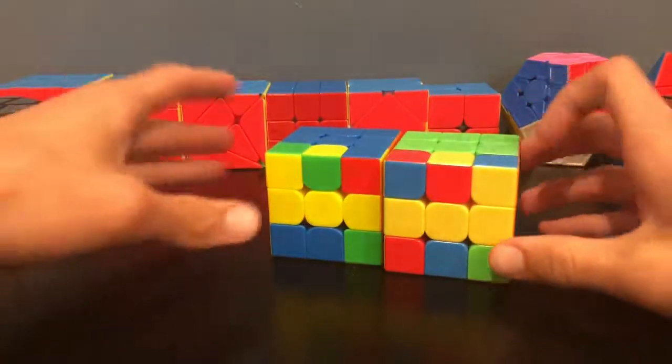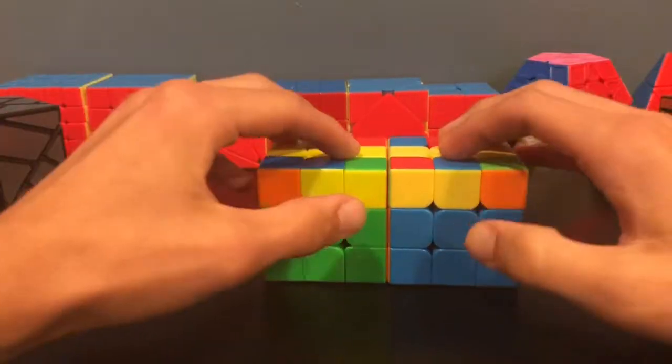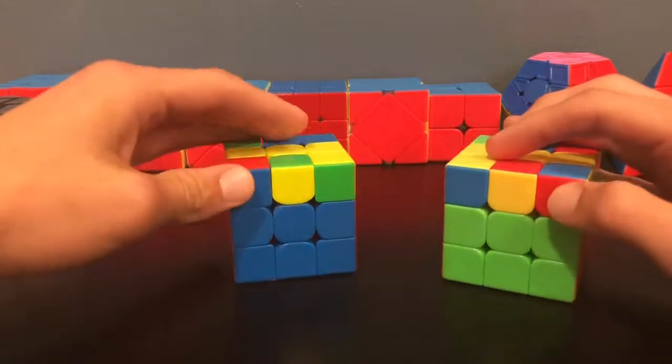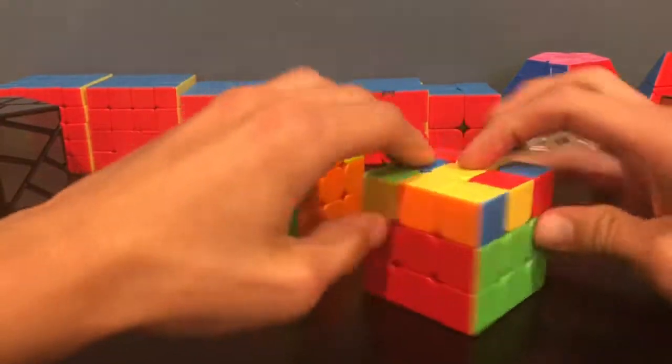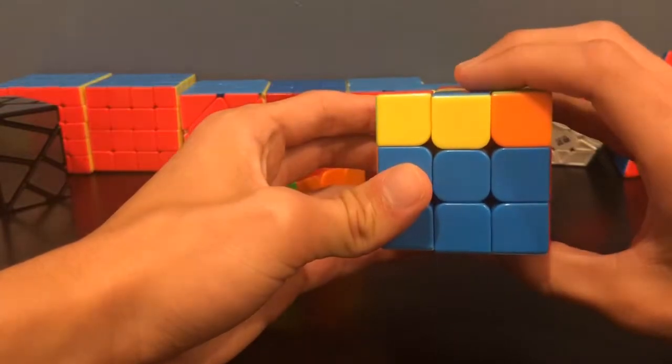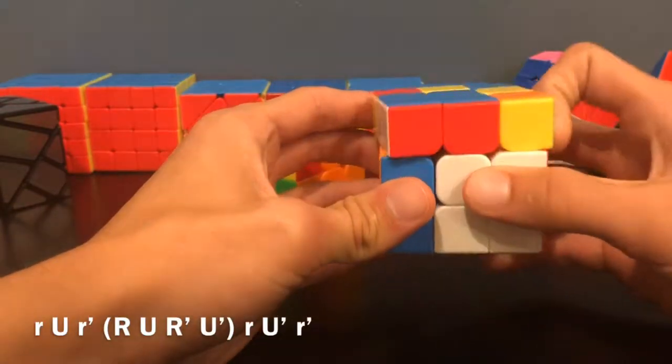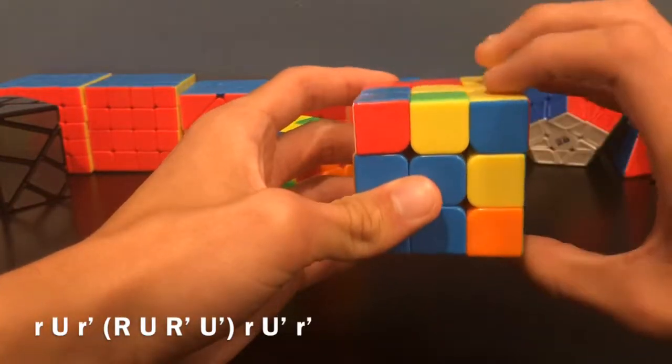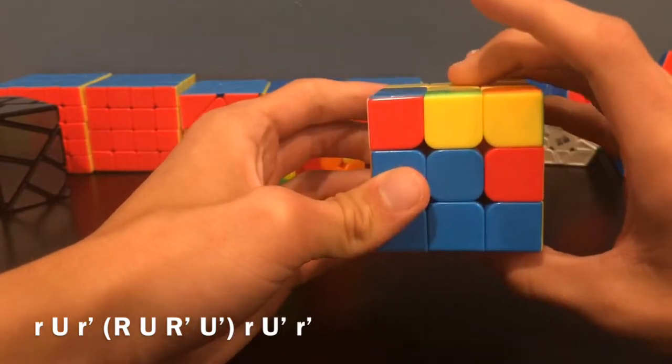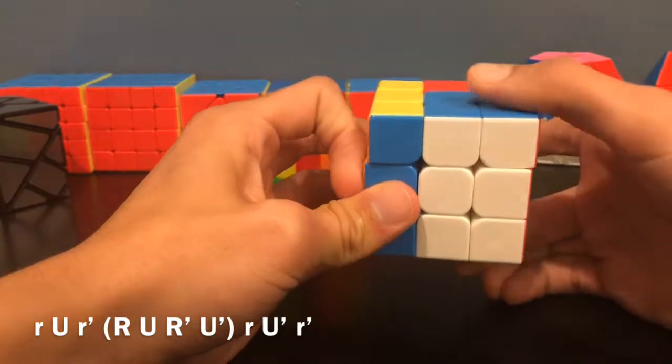These other two cases look similar, but they are different. So notice that we have blocks of two here, but then no two yellow pieces touching each other on this side. So if when you hold it, the dot is on the right here, then you'll do this algorithm: R wide U R wide prime R U R' U' R wide U' R wide U' R wide prime.